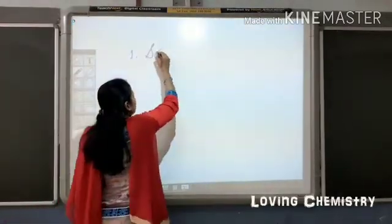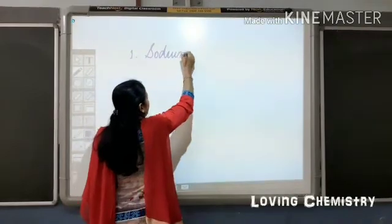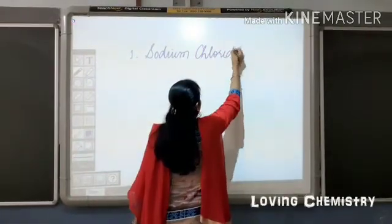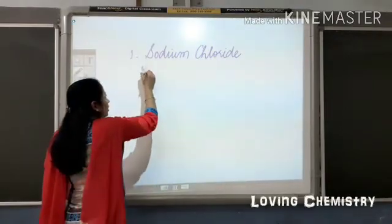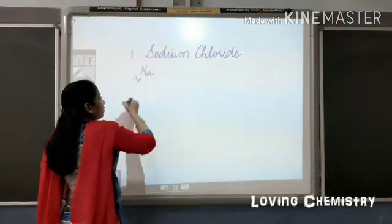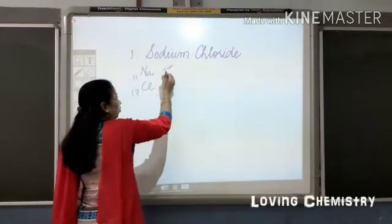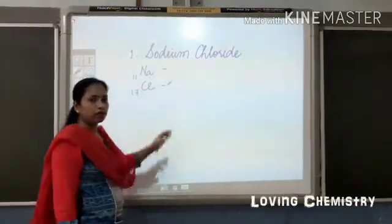Let us take the example of sodium chloride. Sodium, atomic number 11. Chlorine, atomic number 17.